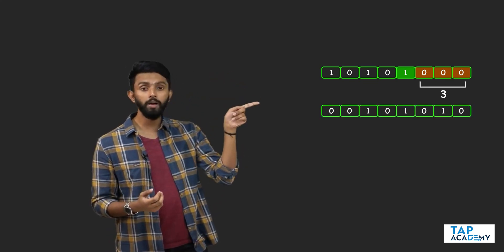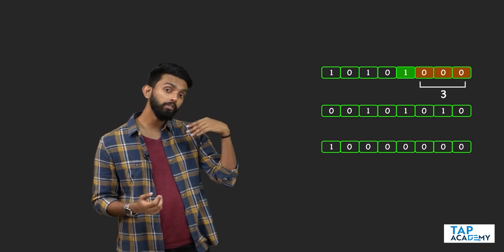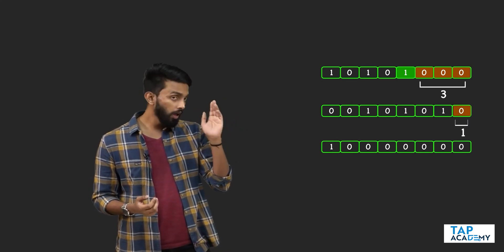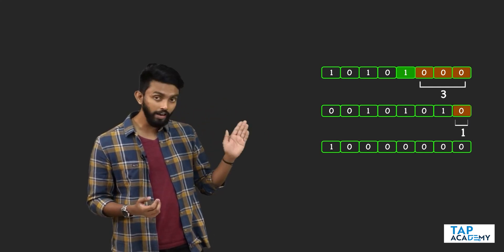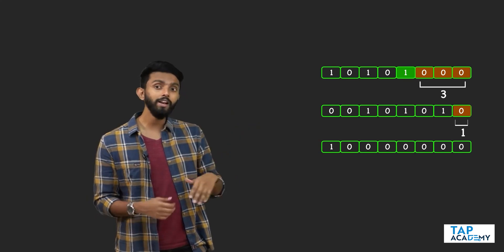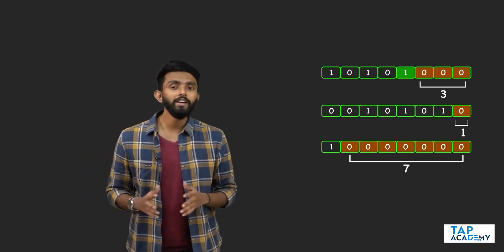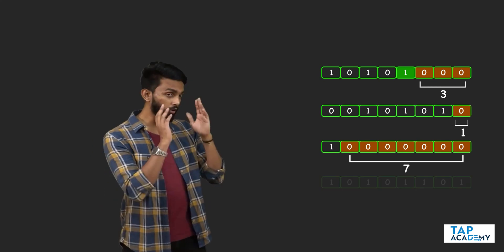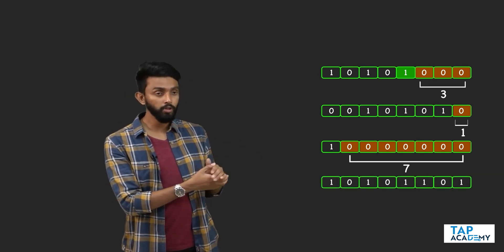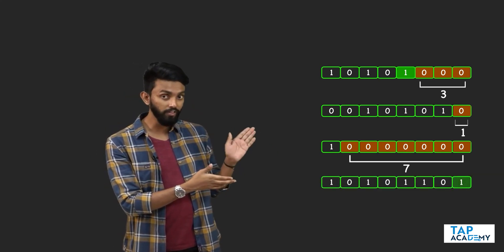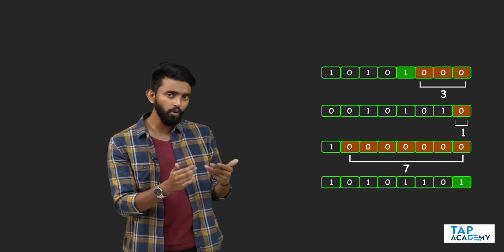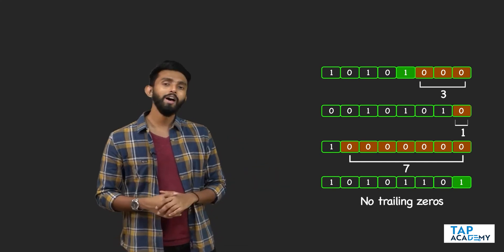Another binary number: after the rightmost set bit, how many trailing zeros are there? One. Another binary number has a total of seven trailing zeros. One more example: if the rightmost set bit is the first bit, there are no trailing zeros.